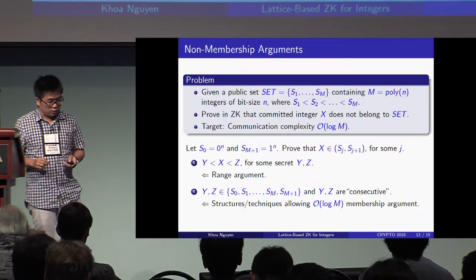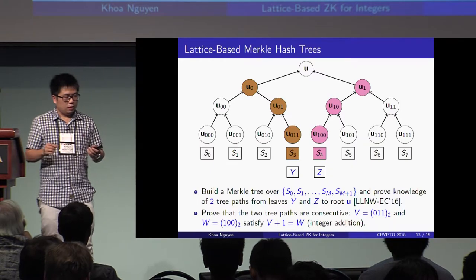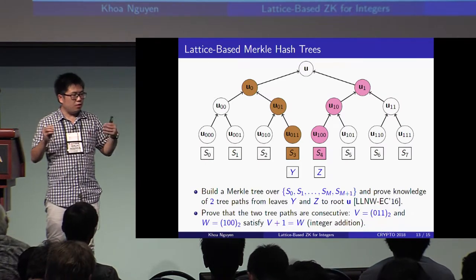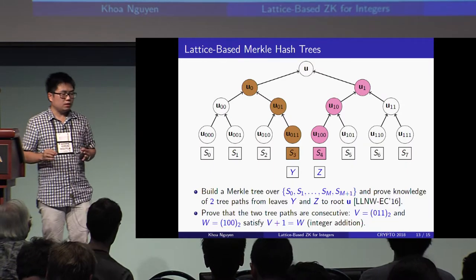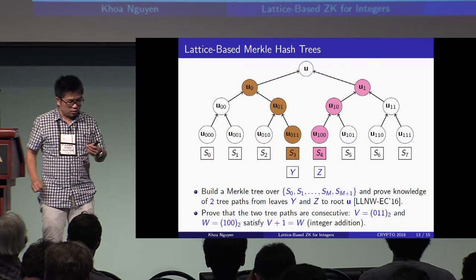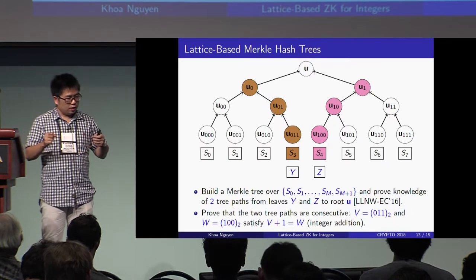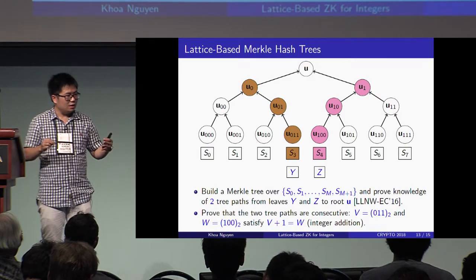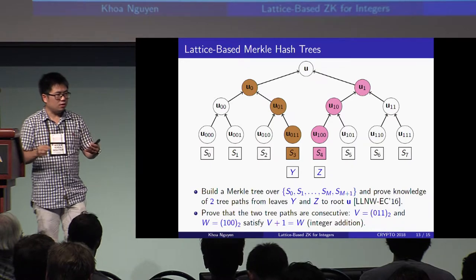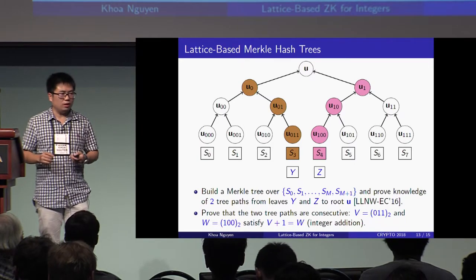To achieve complexity logarithmic in the cardinality of the set, we use a Merkle hash tree. Assuming M plus two is a power of two, we build a Merkle hash tree based on lattices over the elements of the extended set, and we prove knowledge of two tree paths from leaves Y and Z to the root — using a technique from the same set of authors from Eurocrypt two years ago. The tree structure allows us to obtain an argument of logarithmic size. To prove Y and Z are consecutive set elements, we prove that the two tree paths are consecutive: letting V and W be the integers corresponding to the binary strings indicating the two paths, we prove that V plus 1 equals W — just one simple integer addition.